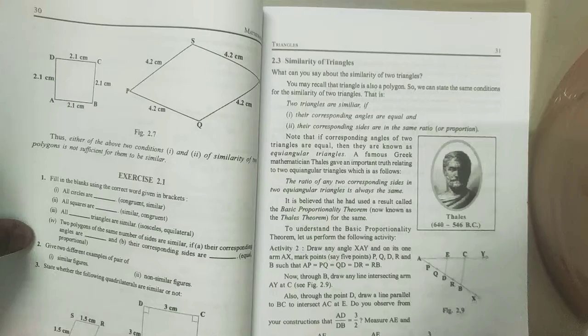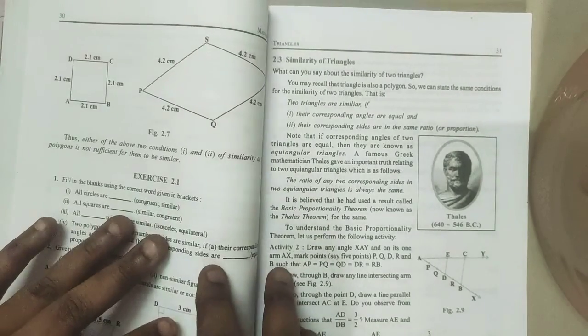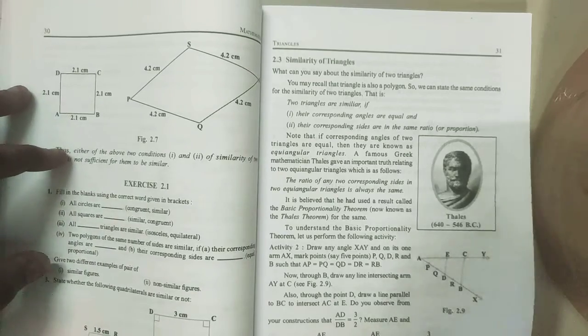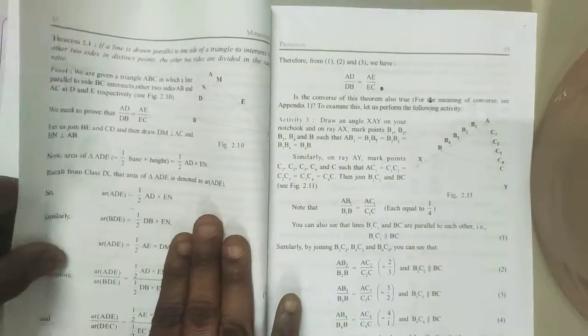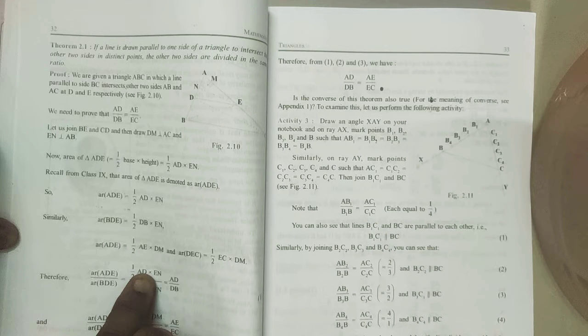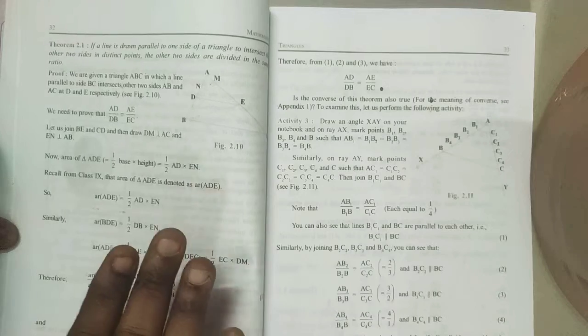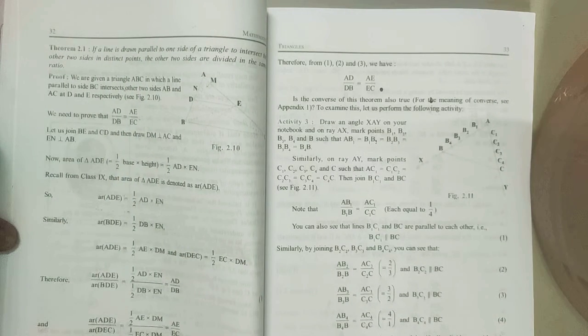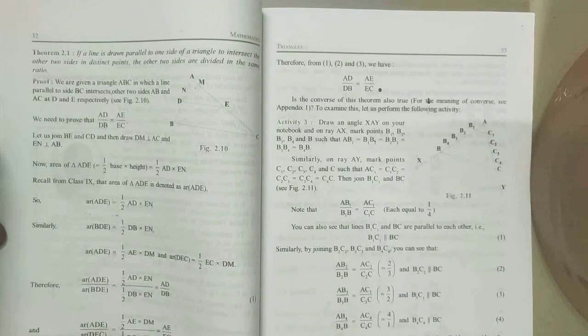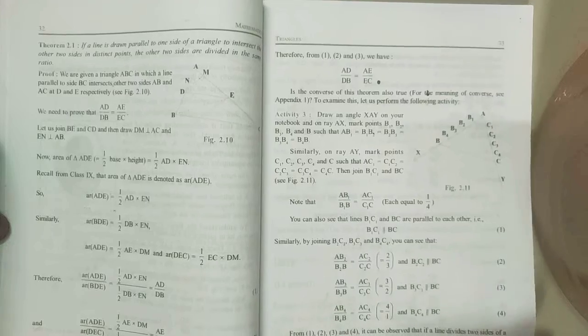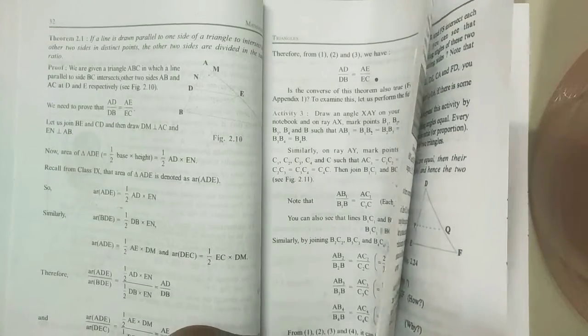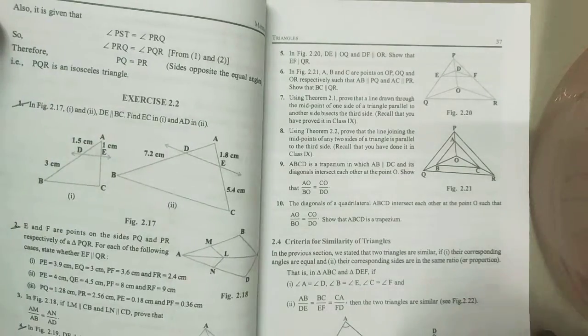First be thorough with the theorems because there are 3 important theorems. Actually around 5 theorems are there but 3 are more important. First one is the BPT theorem, that is basic proportionality theorem, otherwise known as Thales theorem or BPT. It is a guarantee appearing question for 5 marks. Out of 3 questions, that is 3 theorems, 1 you will get for 5 marks. So be thorough with the theorem and the statement.